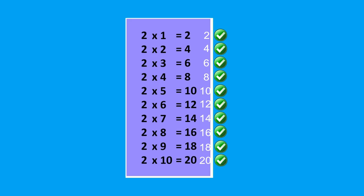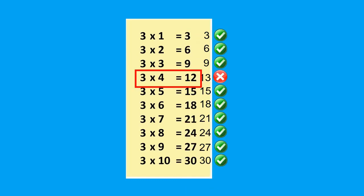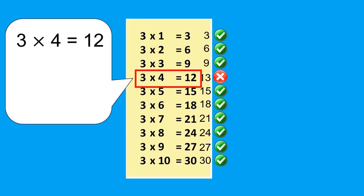If you get something wrong, you have to read out that line until you remember it. Let's say I got this wrong. I will focus on it and just keep repeating. Three four twelve, three four twelve, three four twelve.